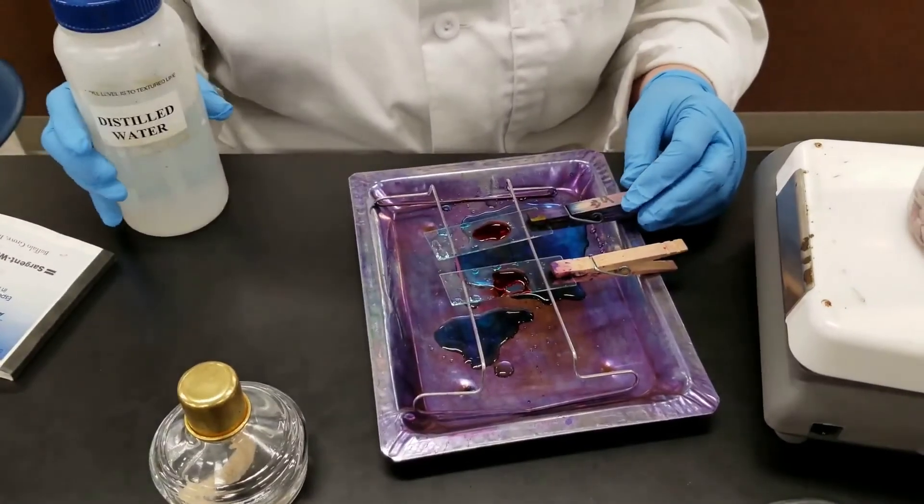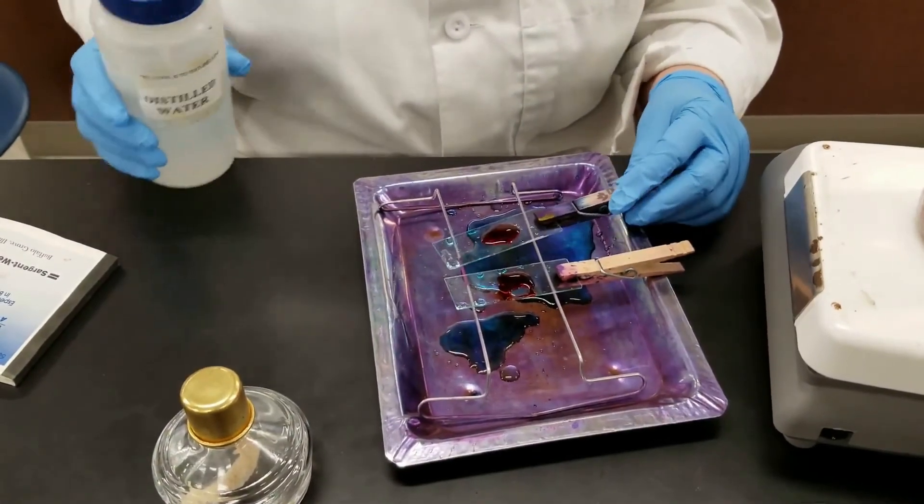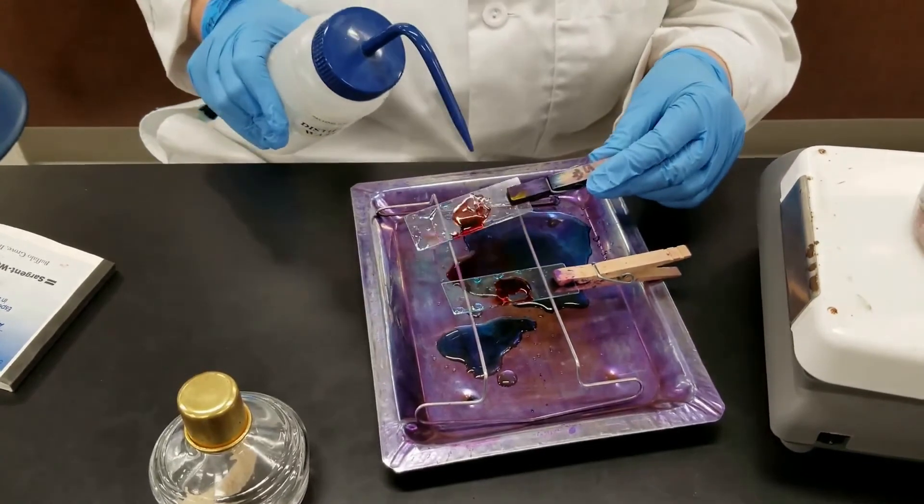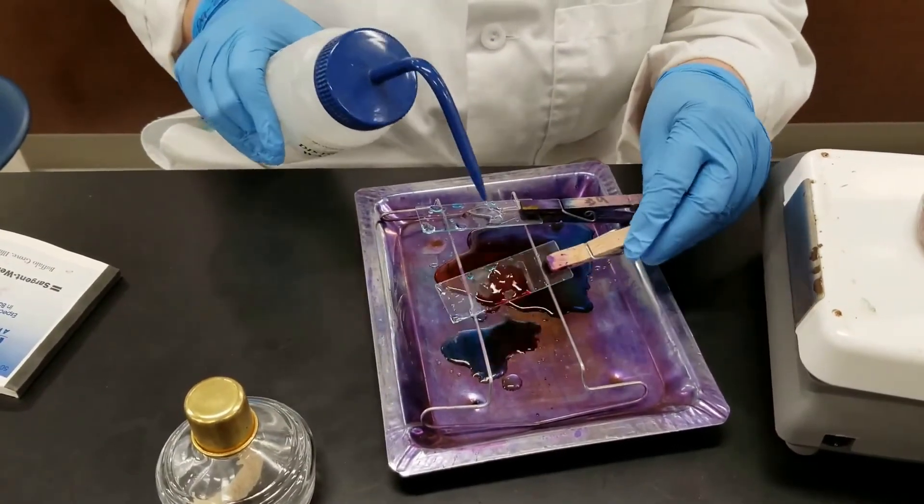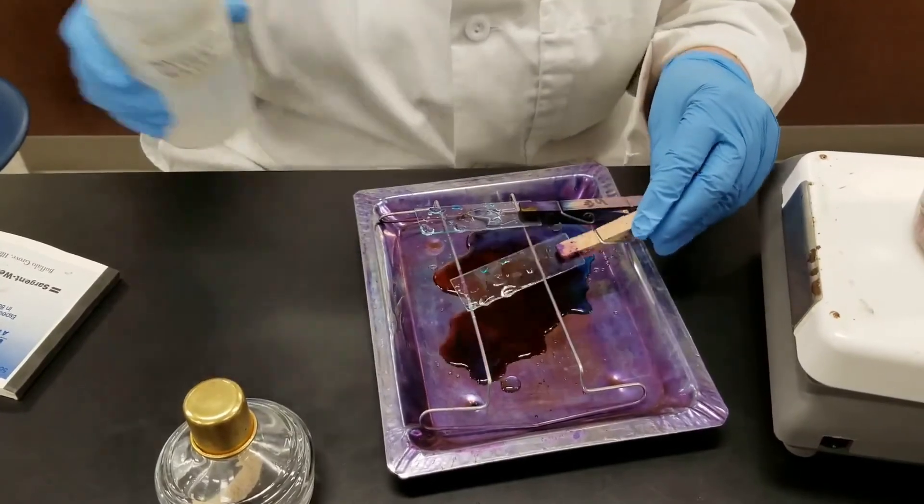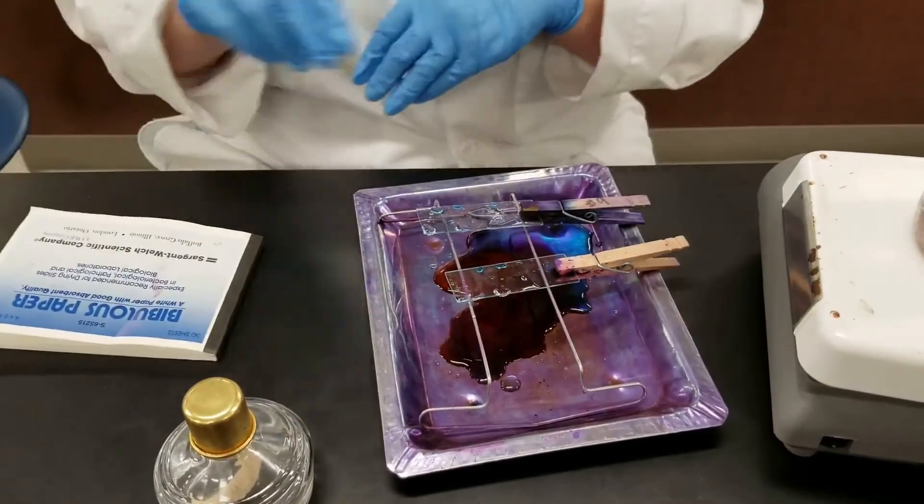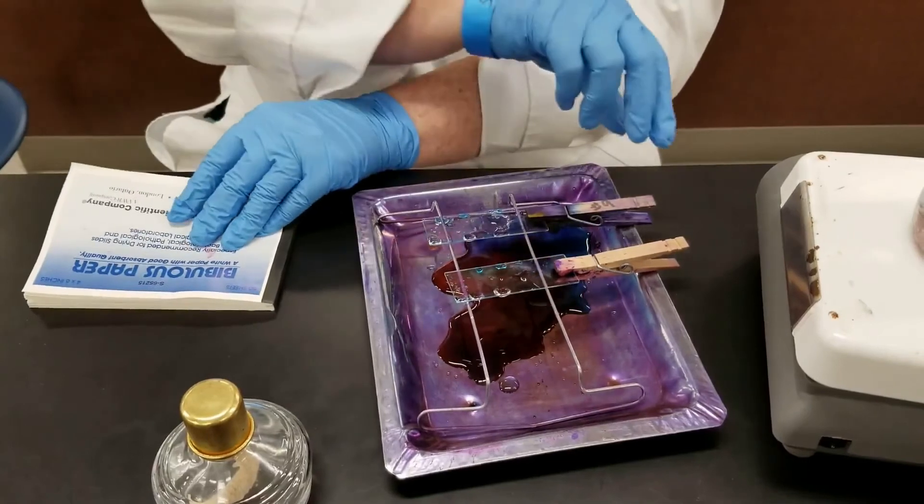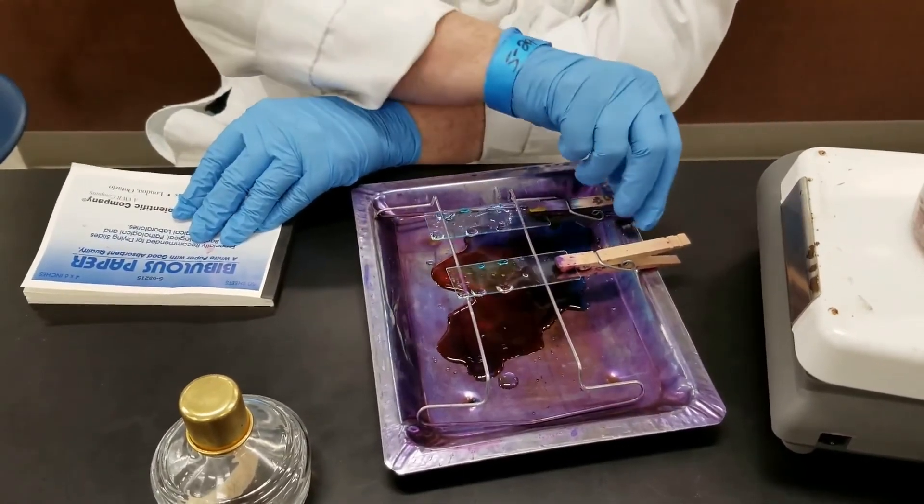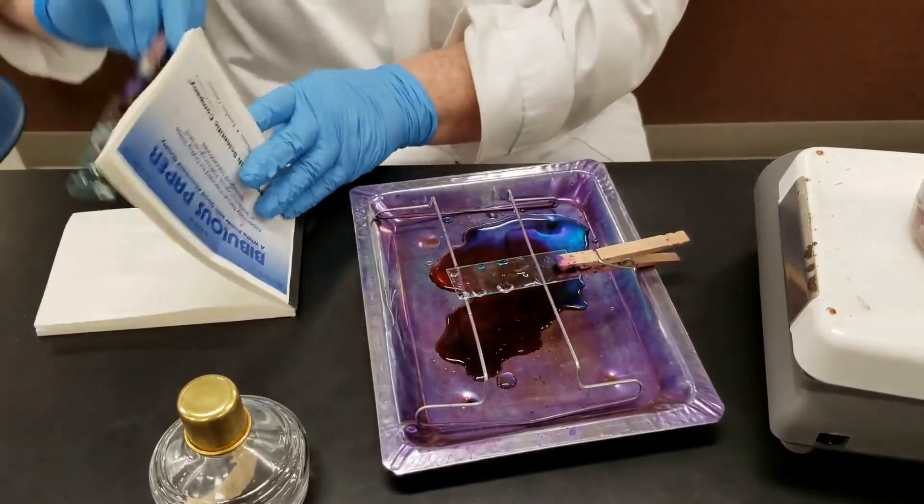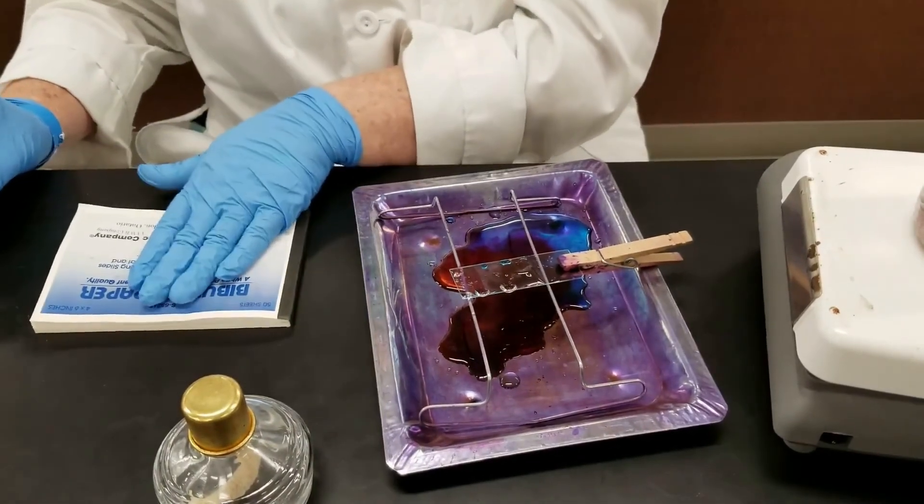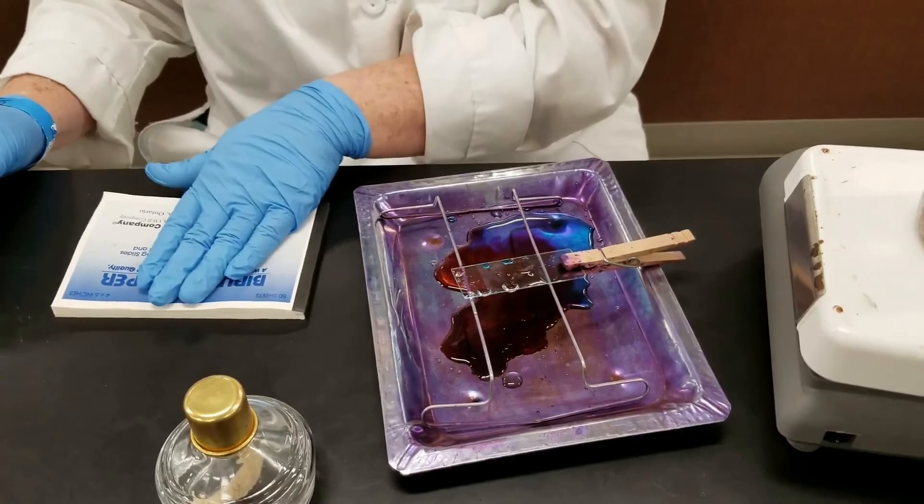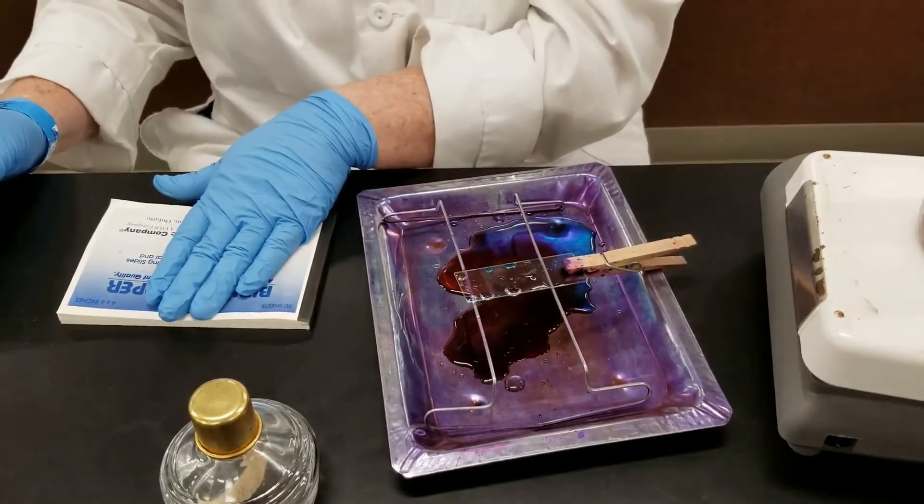Okay, one minute is up. Now we're going to rinse the safranin red off. Just like you're used to for a lot of other stains, we are going to now blot it in the bilbis paper. Remember, don't press it too hard. You don't want to break the slide. When you're done, then we're going to view it under the microscope.